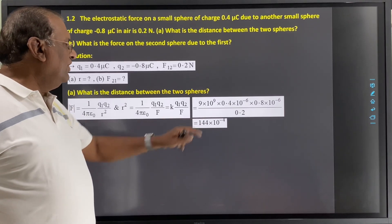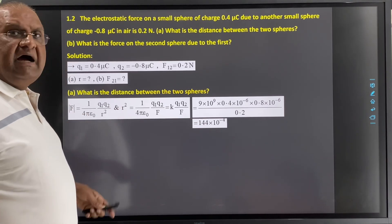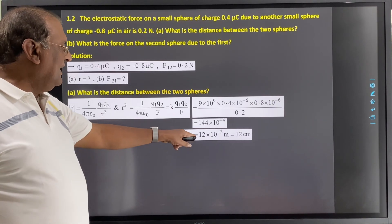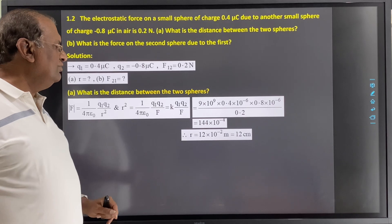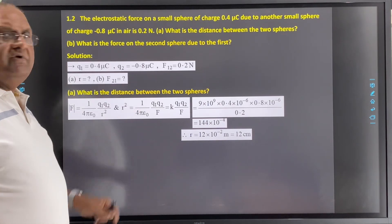So this is 144 into 10 raise to minus 4, this is r squared. Taking the square root, we get r equals 12 into 10 raise to minus 2 meter, which is 12 centimeter. So this is our distance.